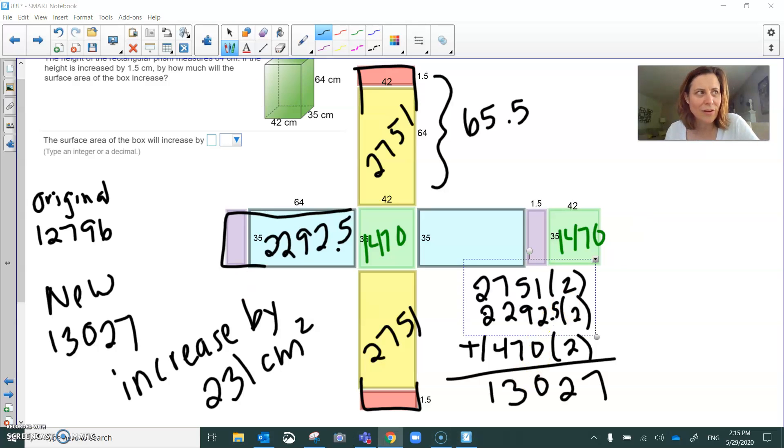Oh, no. You know what I did in the answer thing? I typed 213. I just, oh. Okay. I was right. Okay. So, I was right the first time. There's an increase of 231 centimeters squared. I'm just going to push stop here. I apologize.